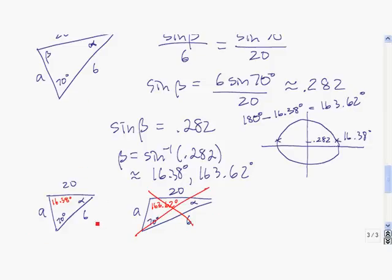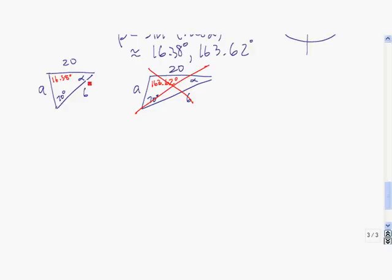So we're only going to have one triangle that solves the given case, and it's going to be this triangle here. So let's continue to find the remaining parts. We can find alpha by subtracting these two angles from 180 degrees. So alpha is going to be about 93.62 degrees.